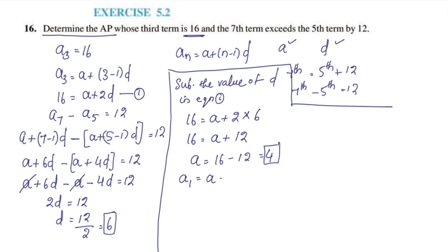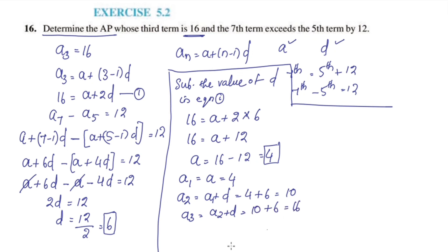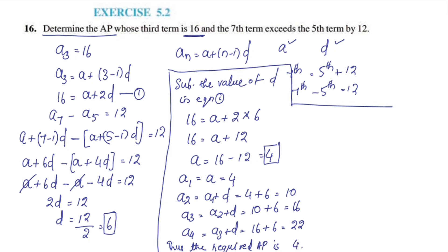Thus the required AP is: the 1st term a1 = A = 4, the 2nd term a2 = A + d = 4 + 6 = 10, the 3rd term a3 = 10 + 6 = 16, the 4th term a4 = 16 + 6 = 22, and so on. The required AP is 4, 10, 16, 22, ...